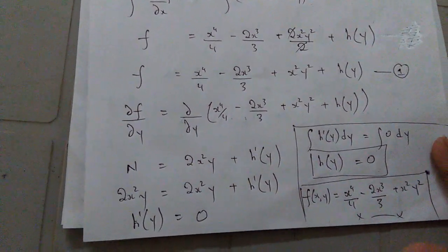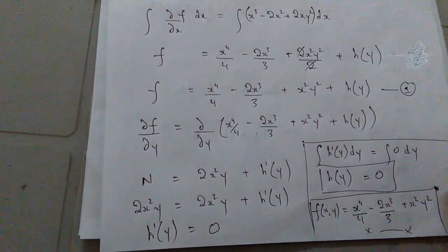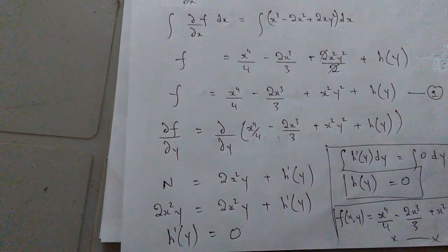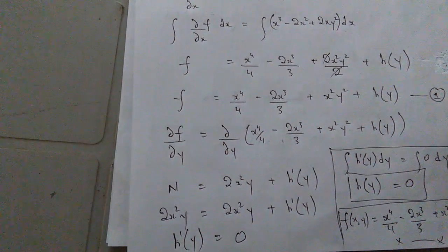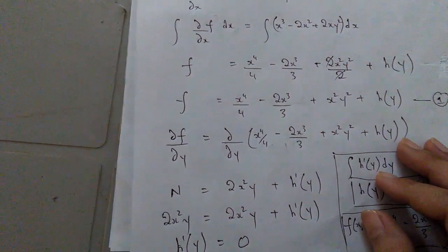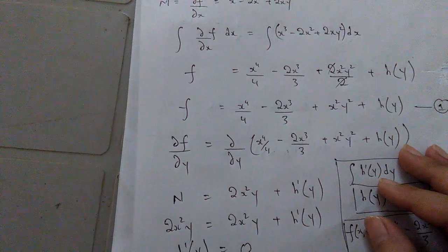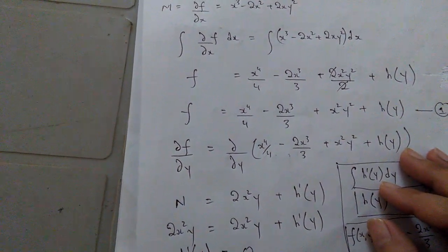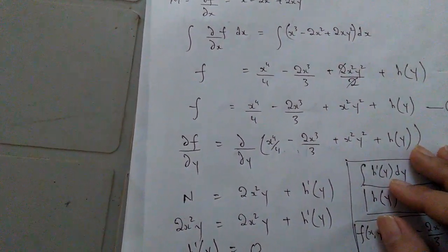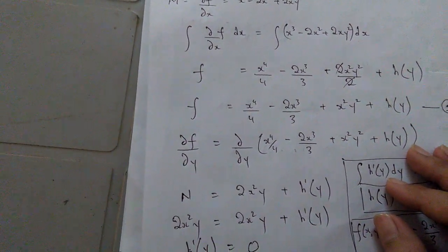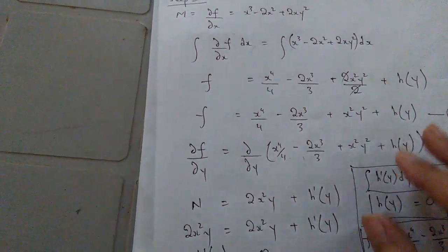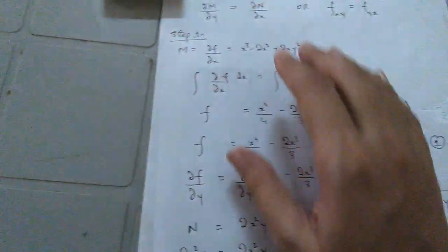So this is all for today. I hope the concept of converting a non-exact ODE into exact form using the first rule is clear, and that this example helped deepen your understanding. If you find this video helpful, please subscribe to my channel, hit the like button, hit the bell icon, and don't forget to write your feedback in the comment box. You can also find relevant links for first order ODEs in the description box. I'll see you next time with the second rule of the same topic.